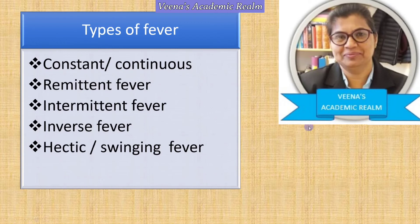Hectic fever, also called swing fever, is similar — there is again a wide fluctuation: 101°F in the morning, subnormal (less than 95°F) at one point, and then again an increase in body temperature. It is called hectic or swing fever.